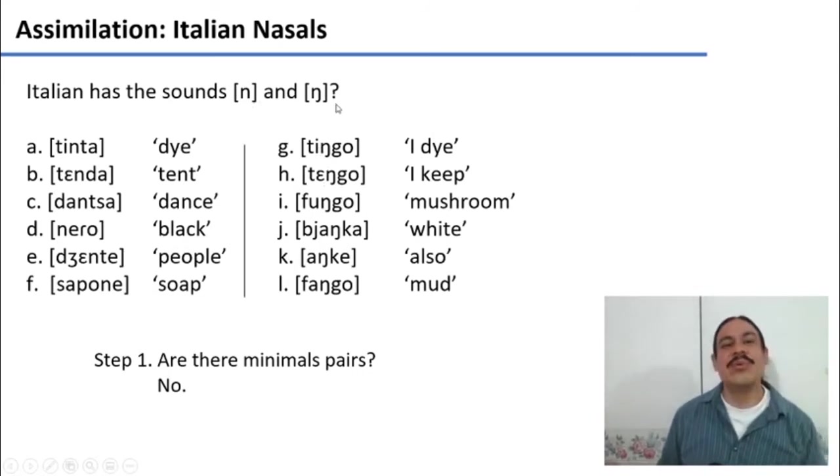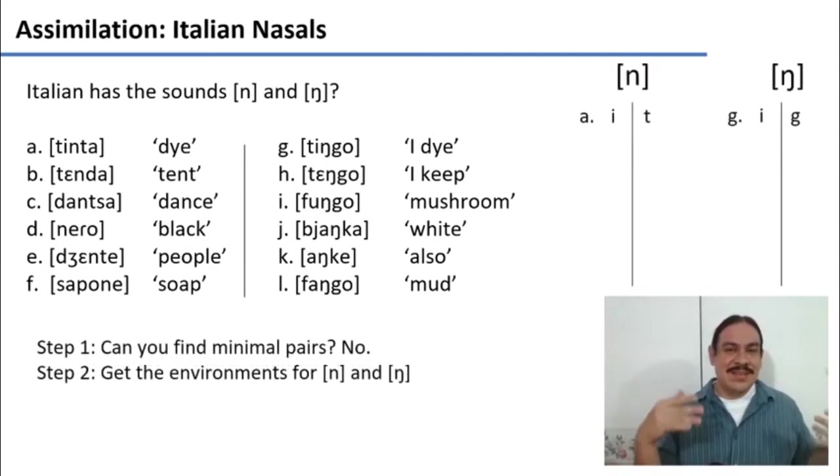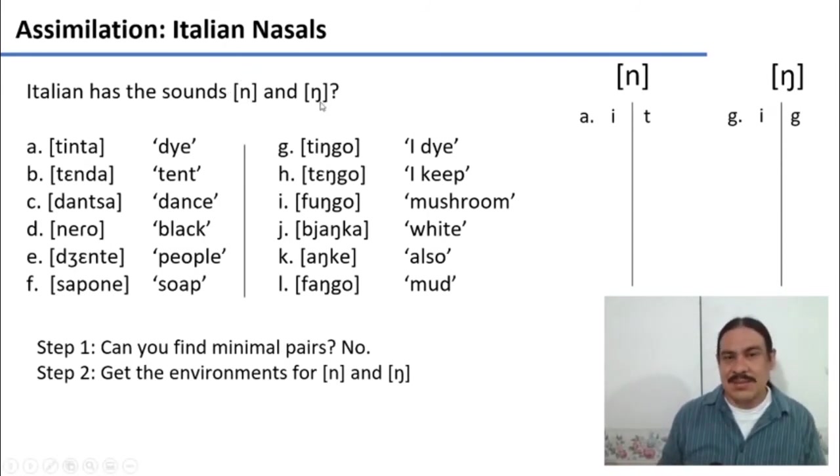How did immigrants assimilate? Americanization is the process of an immigrant to the United States becoming a person who shares American values, beliefs, and customs by assimilating into American society. This perception typically involves learning the English language and adjusting to American culture, values, and customs.